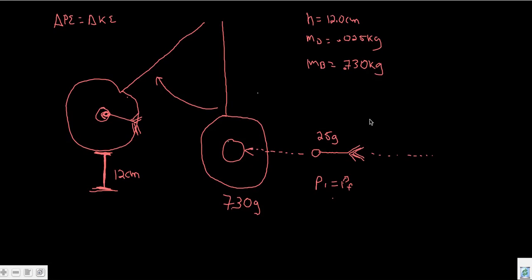All right, welcome back. As promised, we're going to do another one of these problems — this one's just a little bit more complicated. Here's what we're given: we have a swinging target and we have a dart. The dart is 25 grams and the target is 730 grams.